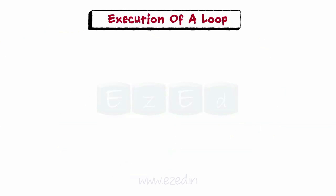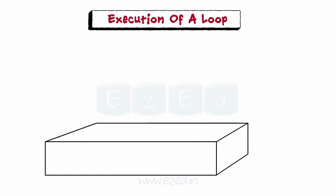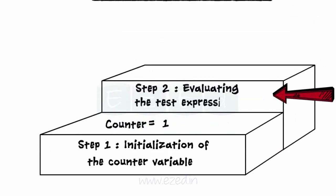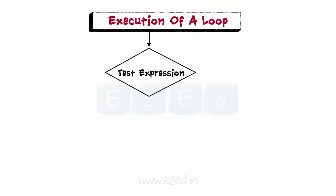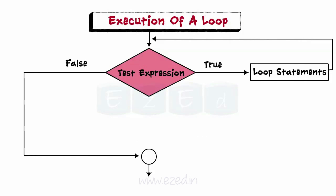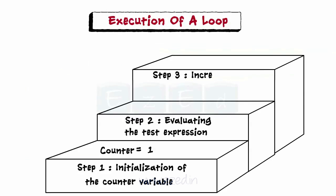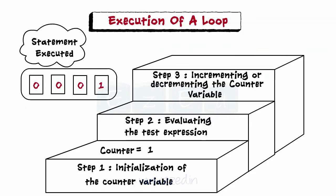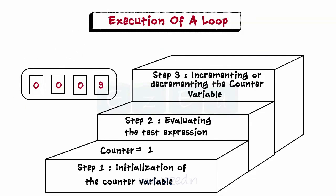Let's learn the basic working of the loop. The processes associated with all loops are: Step 1 is initialization of the counter variable, where the initialization process assigns a value to the counter variable. Step 2 is evaluating the test condition. The test condition is evaluated and based on its result, a decision is taken whether to continue execution of the loop statements or to jump outside the loop. When the result is true, the statements within the loop are executed; and when false, the control jumps to the statement outside the loop. The last step is incrementing or decrementing the counter variable, which is updated every time the statements in the loop are executed, until the counter variable reaches a certain value.